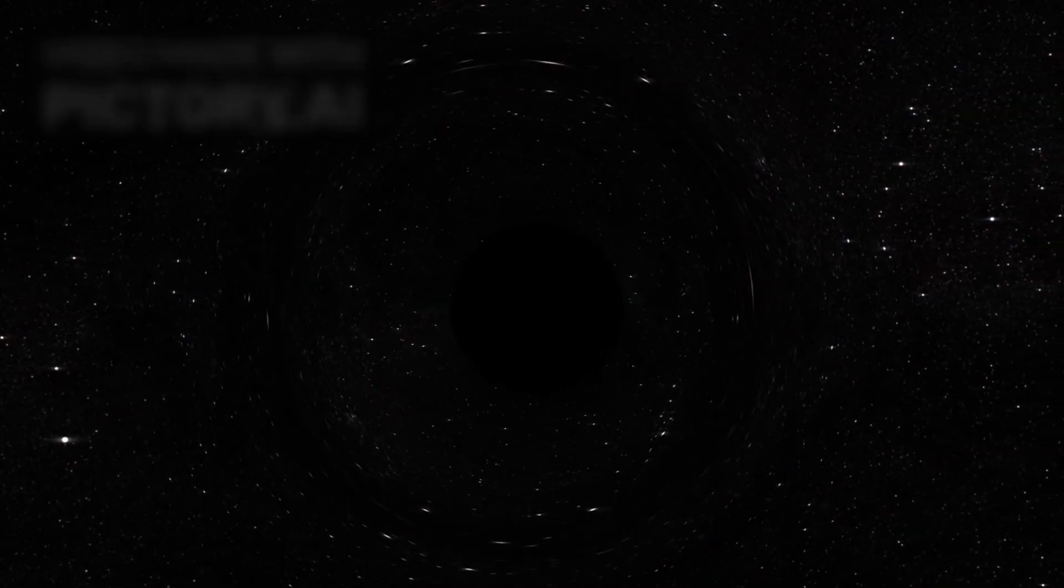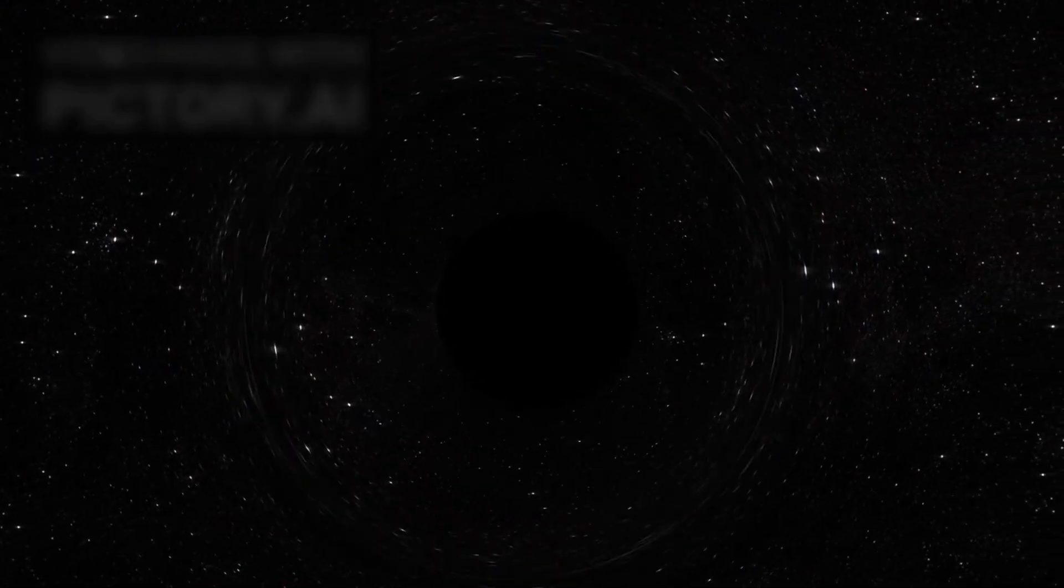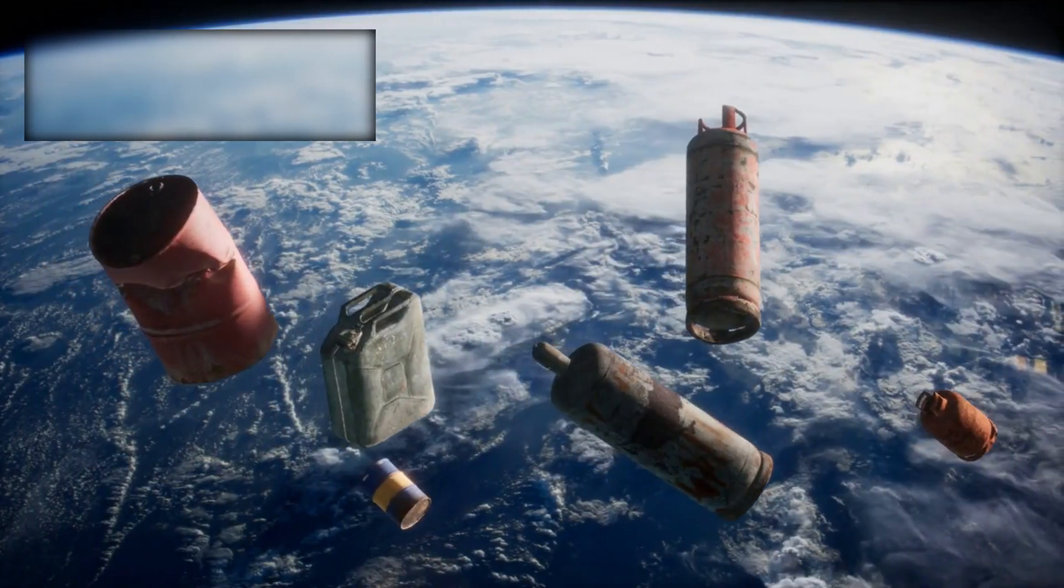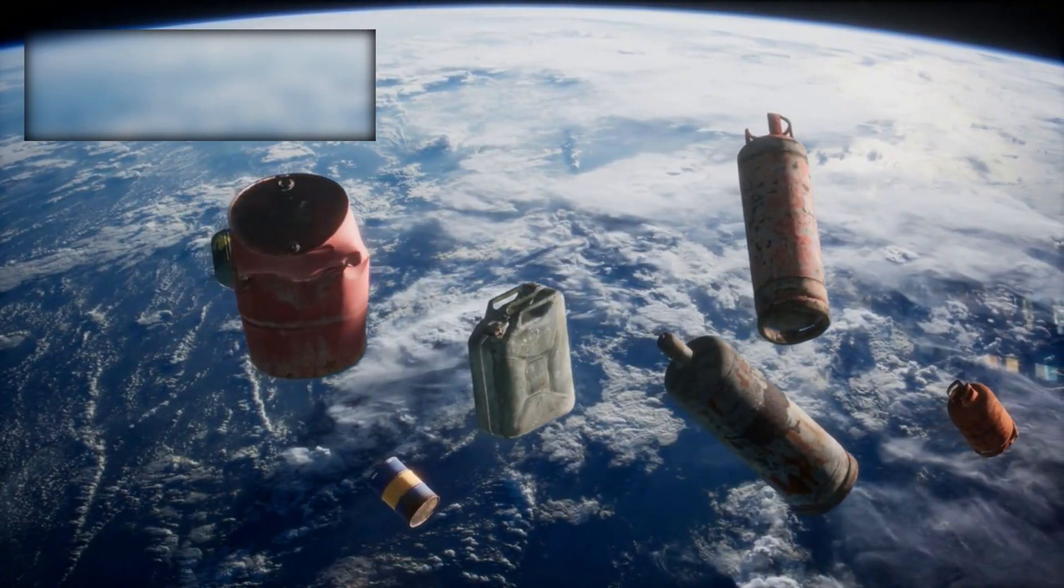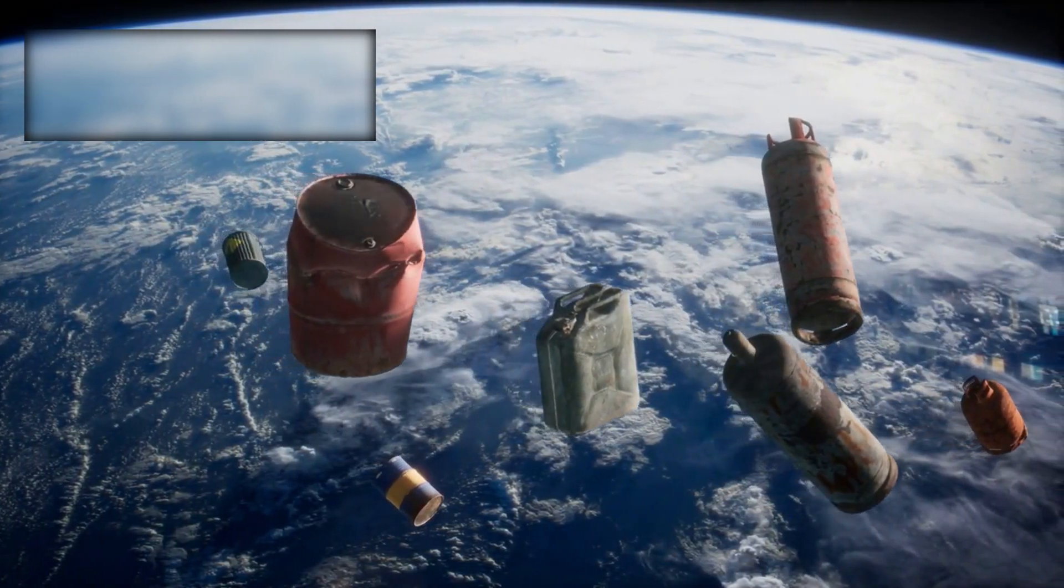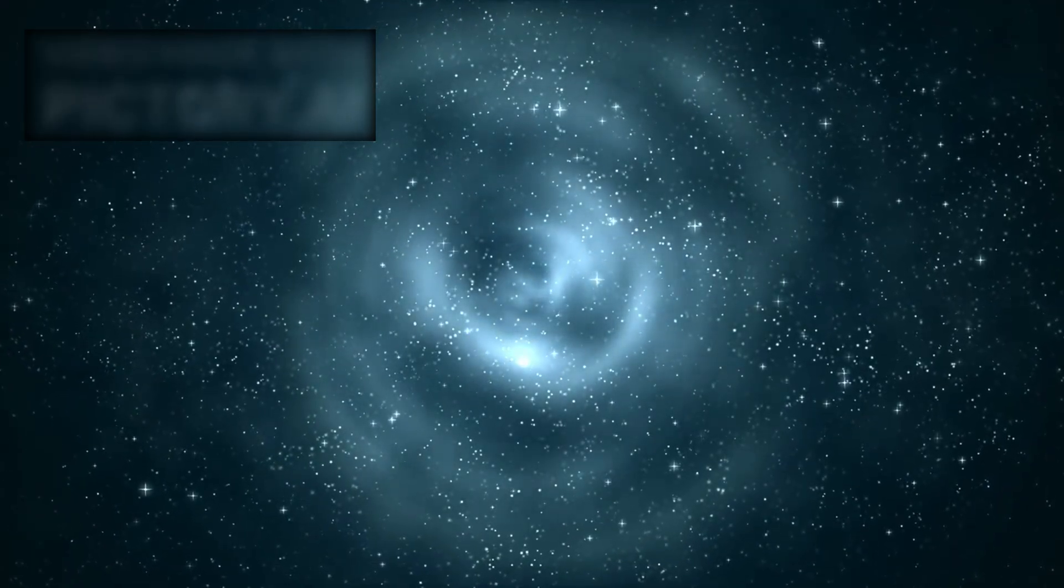Webb only glimpsed them thanks to the natural magnifying effect of gravitational lensing, in which massive cosmic structures bend and amplify light. The discovery suggests that the raw ingredients for life were present astonishingly early in the universe's history. If they were there from the beginning, then perhaps life itself is not rare at all. Perhaps it is inevitable.